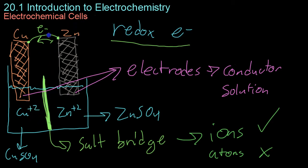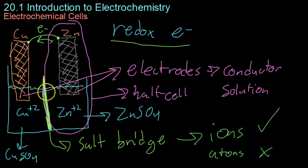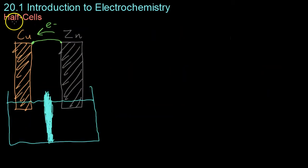Each of these individually, that is the electrode inside a solution of its own ion, is what is known as a half cell. As you'd expect, these two half cells together make a whole electrochemical cell.